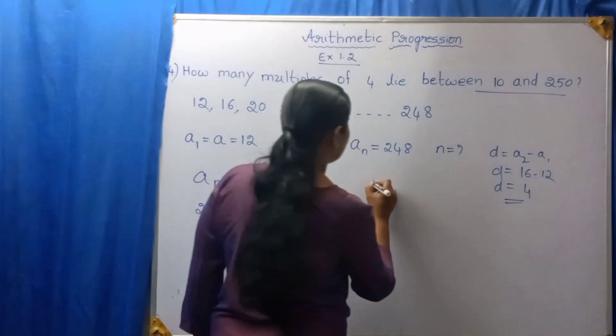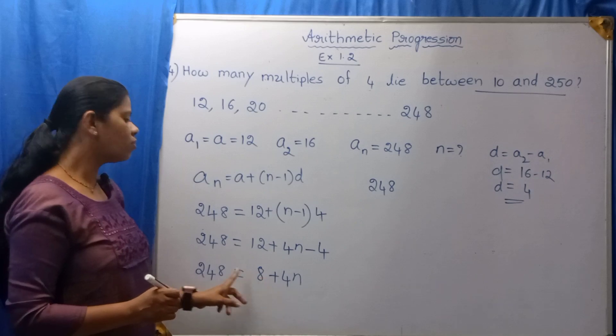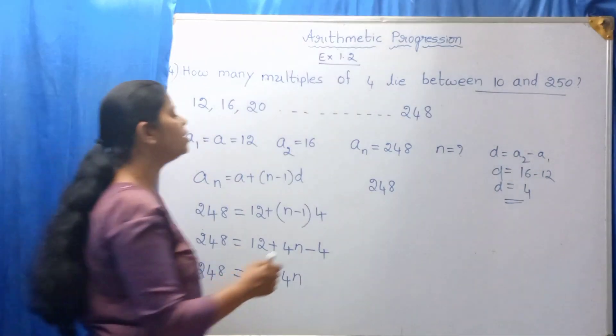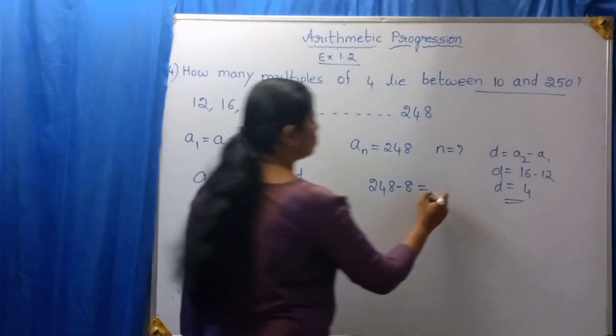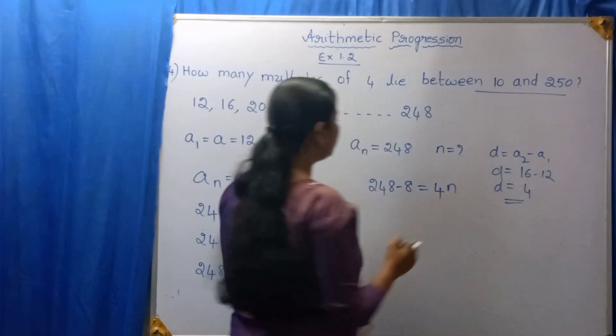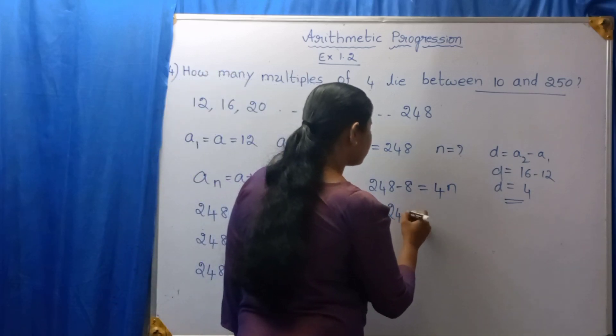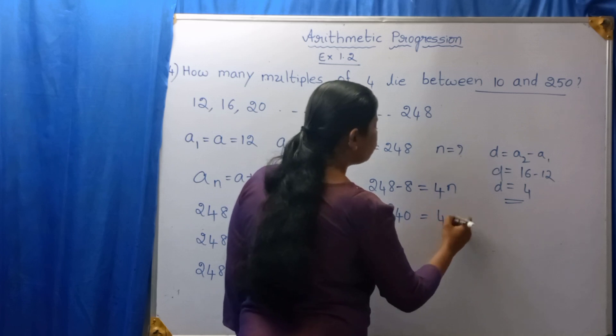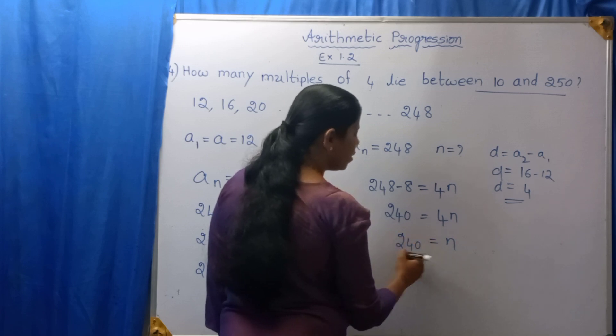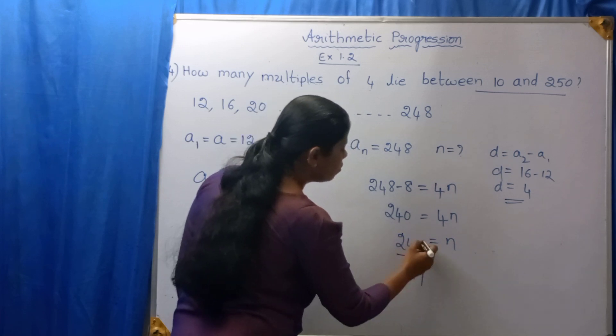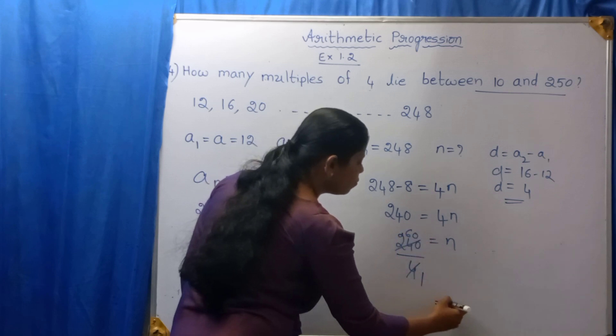When you cross the equal sign, it will become minus 8. 248 minus 8 is 240 is equal to 4n. That is, n is equal to 240 divided by 4. That is, n is equal to 60.